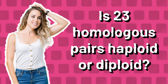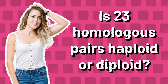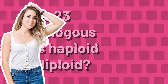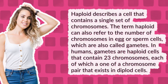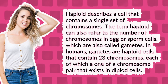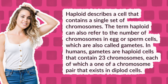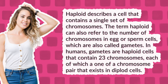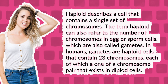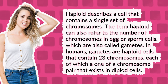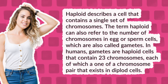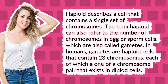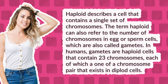Is 23 homologous pairs haploid or diploid? Haploid describes a cell that contains a single set of chromosomes. The term haploid can also refer to the number of chromosomes in egg or sperm cells, which are also called gametes.